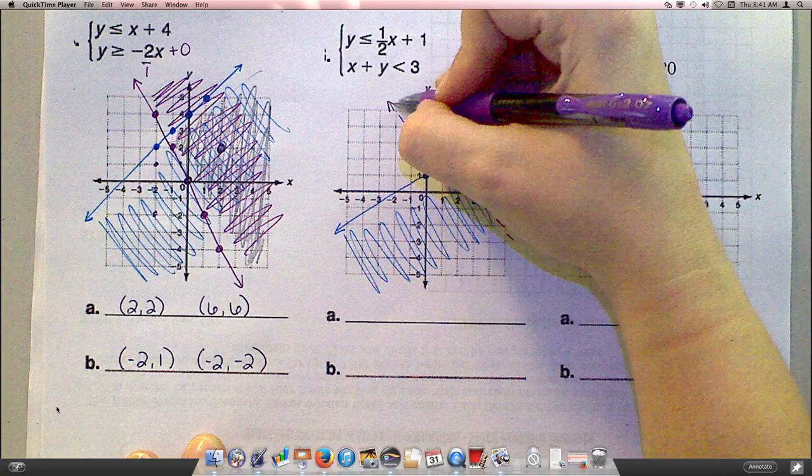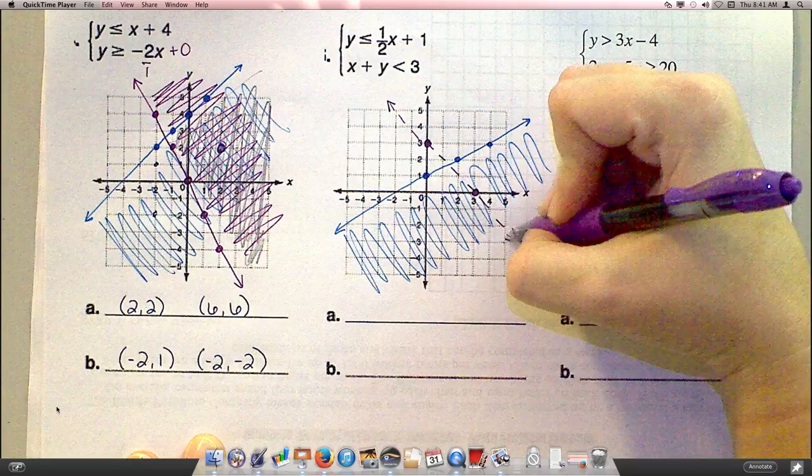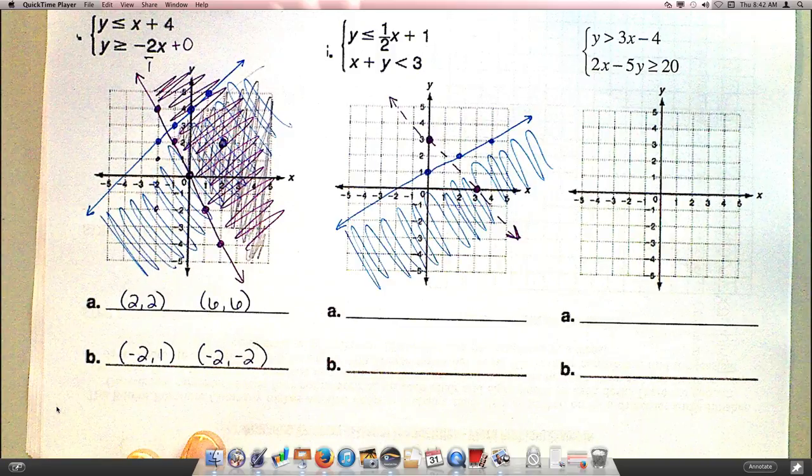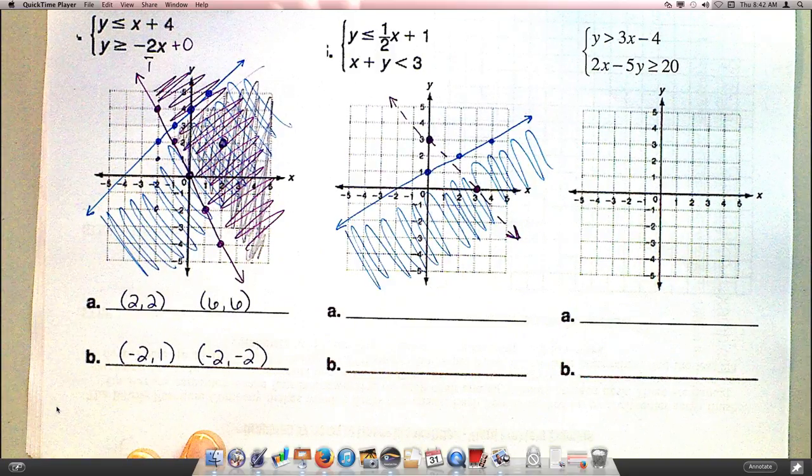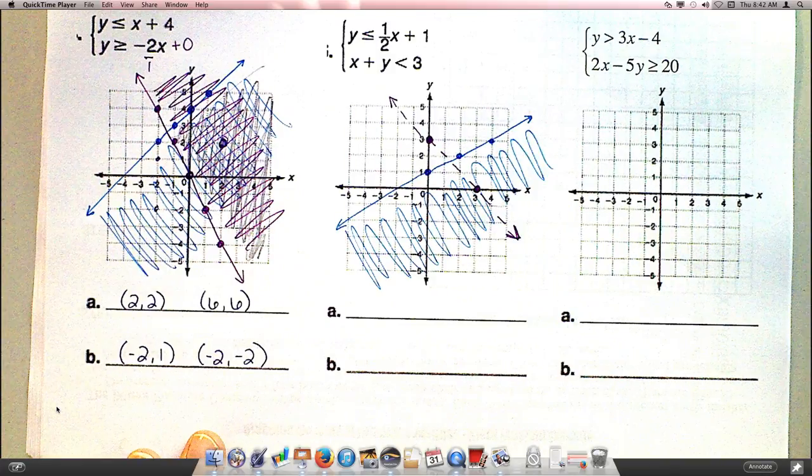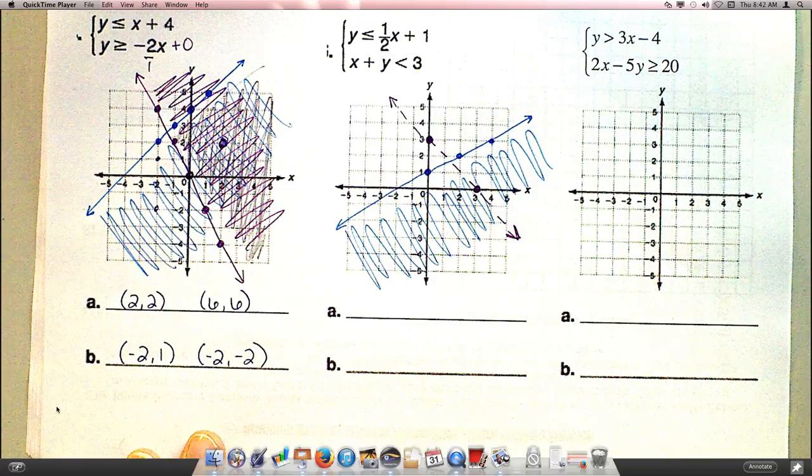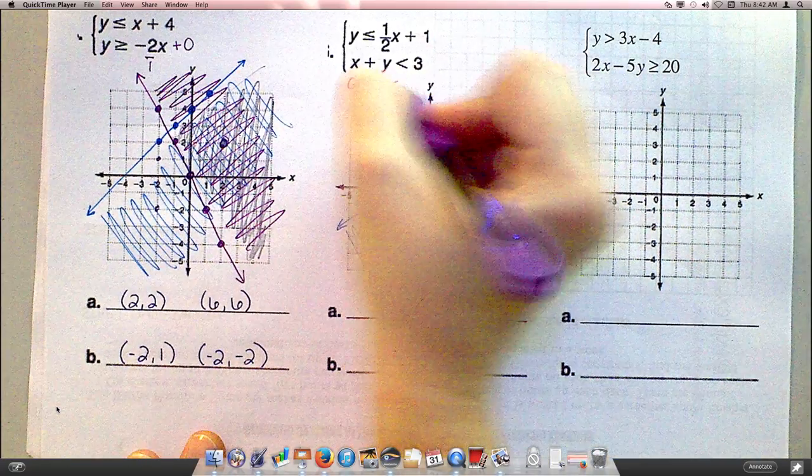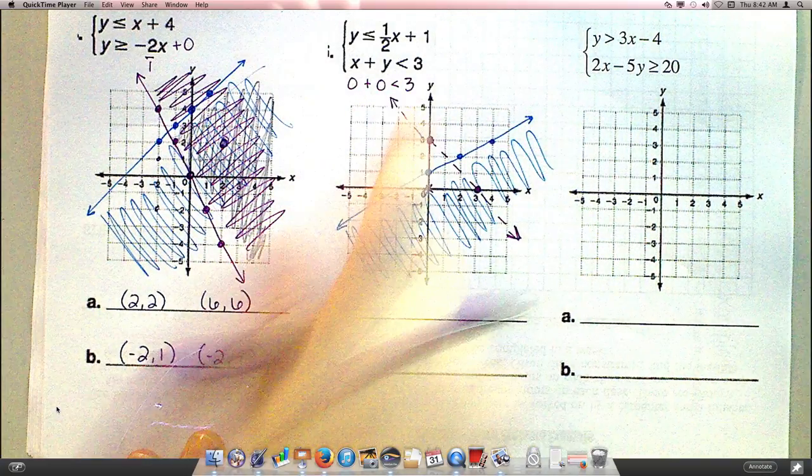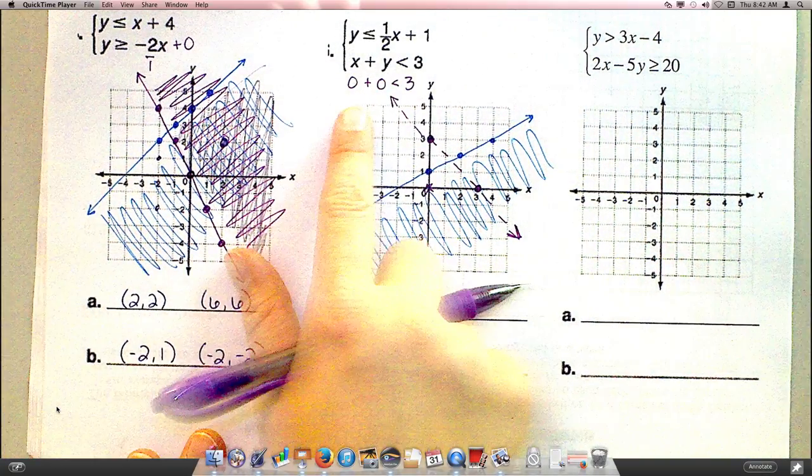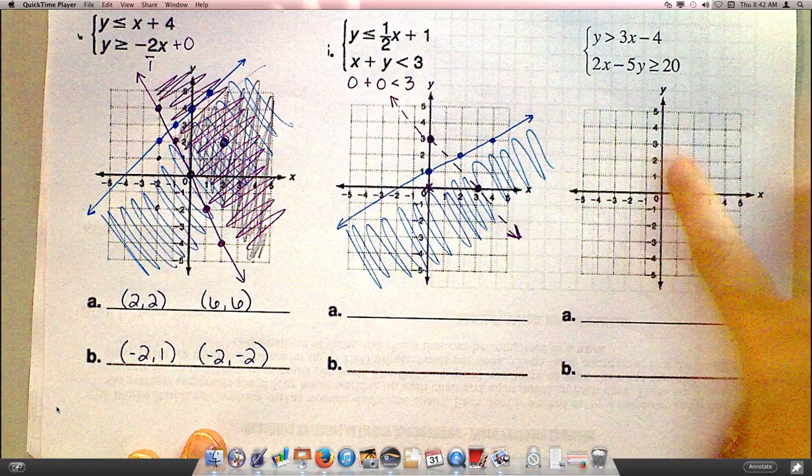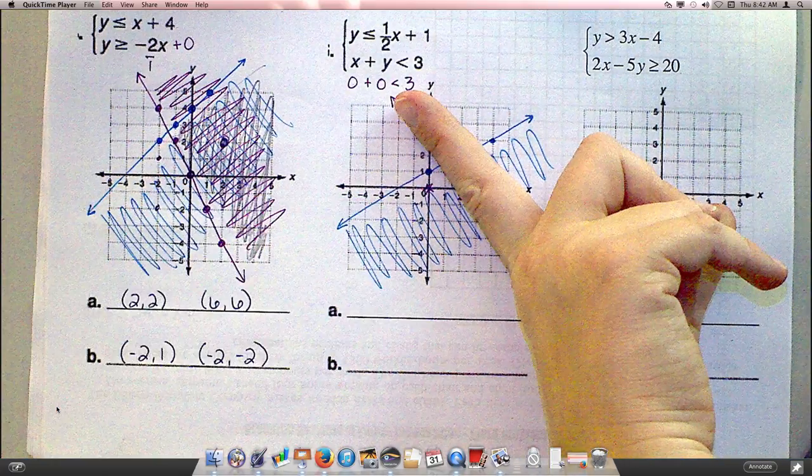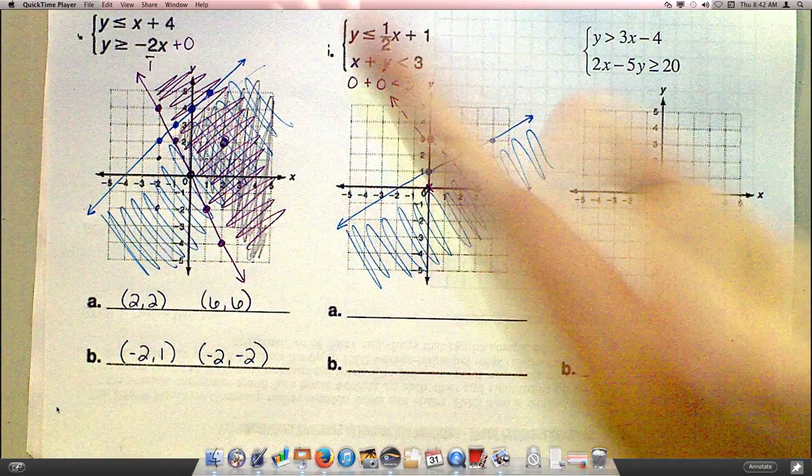How do we have to tell with this one to shade above or below? If it's not written in slope-intercept form, what do I have to do? Test 0 and 0. Test a point, and usually I pick 0, 0. So if I put 0 and 0 in here, is it true that 0 plus 0 is less than 3? Yes, because 0 is less than 3. And so I want to shade the half of this line that does include the 0, 0. So I'm shading down here.